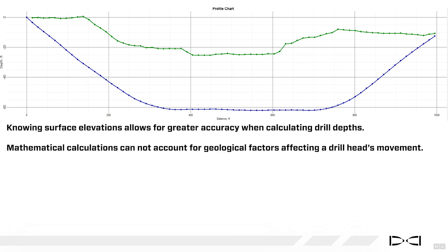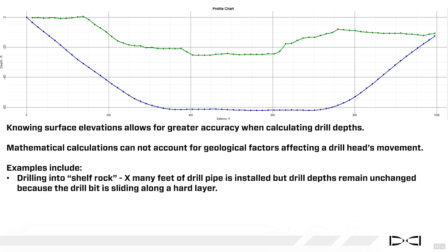Another thing to be mindful of, mathematical calculations cannot account for geological factors affecting a drill head's movement. Examples would include drilling into shelf rock, where many feet of drill pipe are installed, but drill depths remain unchanged because the drill bit is just sliding, just scraping along that hard layer.